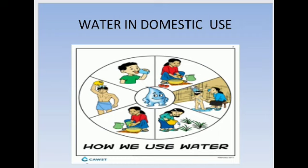Apart from drinking, people use water for many other purposes. These include cooking, bathing, washing clothes, washing utensils, keeping houses and common places clean, and watering the plants. These purposes are known as domestic purposes. So, apart from drinking, we need water for our domestic purposes also.